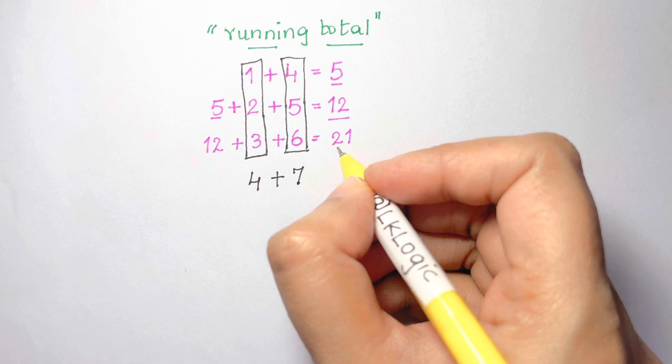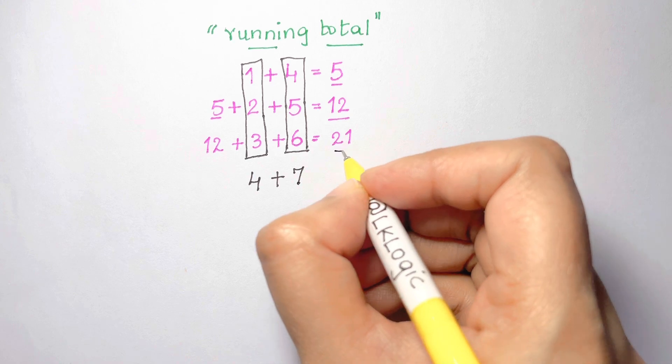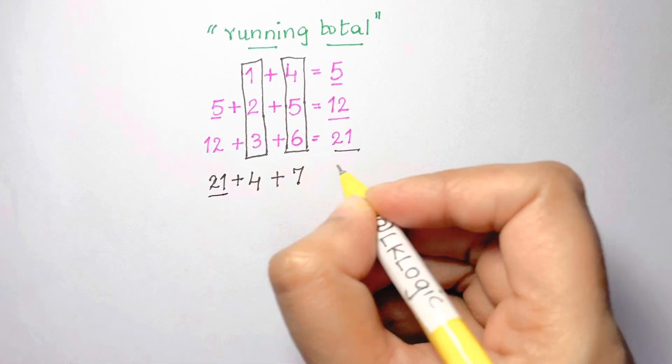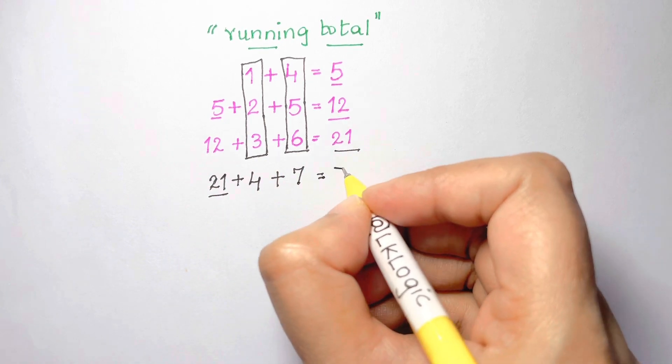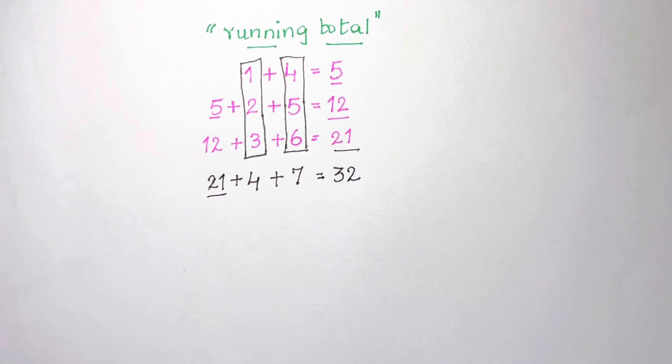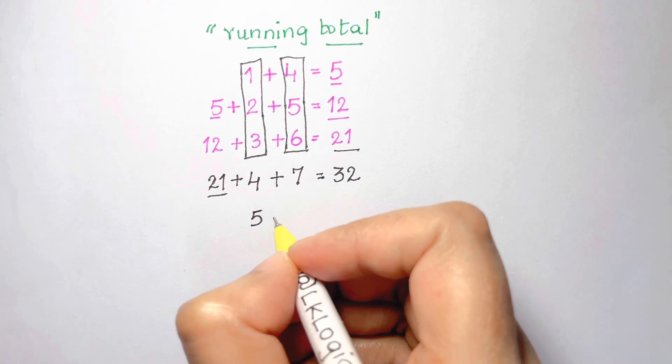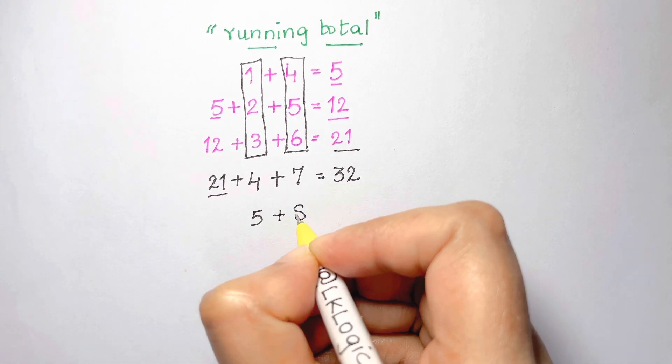Now this is not part of our original puzzle, but if we were to continue the pattern from the original puzzle, we have this extra missing line that could be placed in there. So now what happens if we take our previous total of 21 and add 4 plus 7? We get the answer of 32.